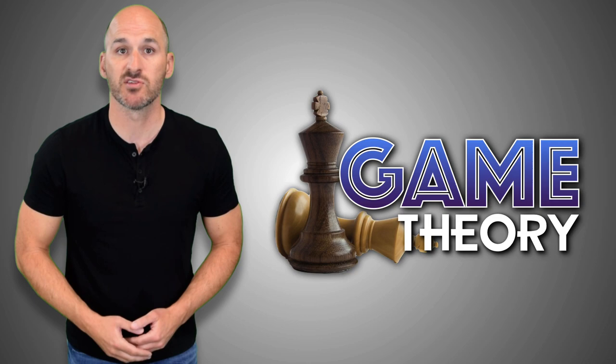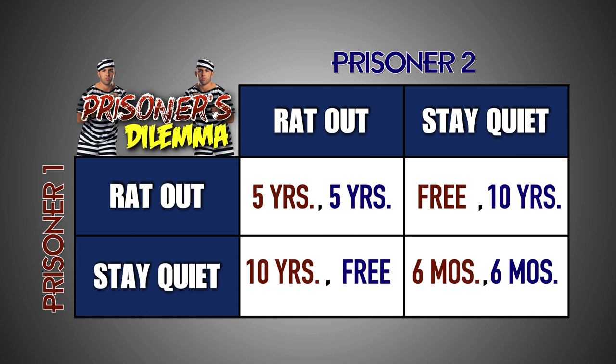Let's take a look at the players, strategies, and payoffs associated with game theory. To better understand how game theory works, let's play a game called The Prisoner's Dilemma. The Prisoner's Dilemma is perhaps the most famous and well-known game in game theory. Assume that two criminals are arrested for armed robbery and taken to separate holding cells at a local police station where they are interrogated by detectives. Provided is a typical game theory matrix for this scenario.